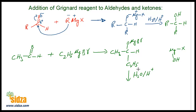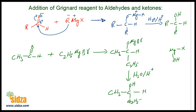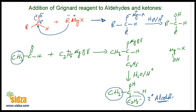Now when you hydrolyze this compound in acidic medium, the oxygen will be attacked by hydrogen and OH is attached with the magnesium. So you get an alcohol — CH₃-C(OH)(C₂H₅)-H. The starting compound is an aldehyde, and from the aldehyde you got a secondary alcohol. This is a 2° alcohol, where one alkyl group is from the aldehyde and another alkyl group is from the Grignard's reagent.